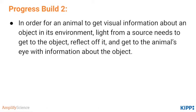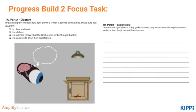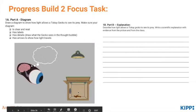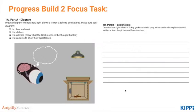At this point, students should understand Progress Build 2: in order for an animal to get visual information about an object in its environment, light from a source needs to get to the object, reflect off of it, and get to the animal's eye with information about the object. Students then complete the Progress Build 2 Focus Task, diagramming how an eye receives information about an object in a mystery box. Go ahead and complete the focus task now, and then check back here for the answers.